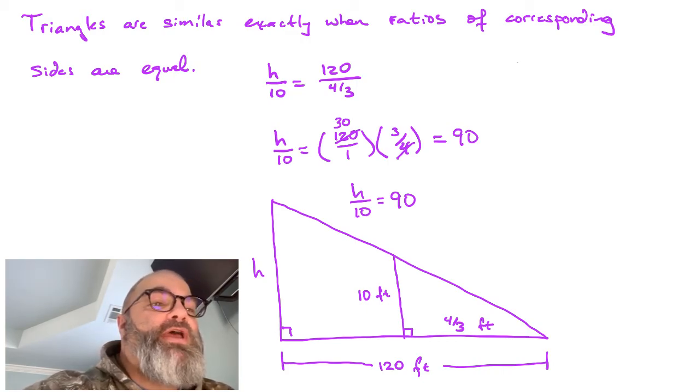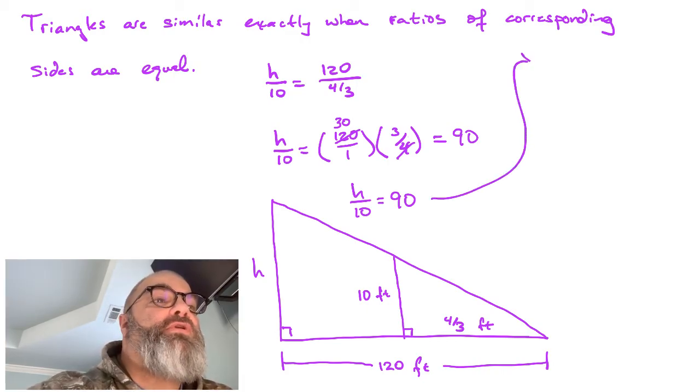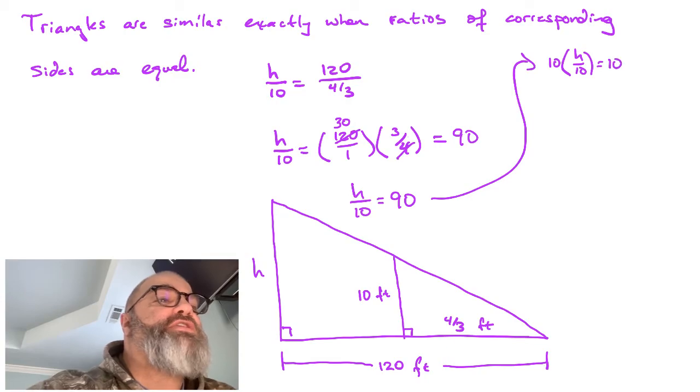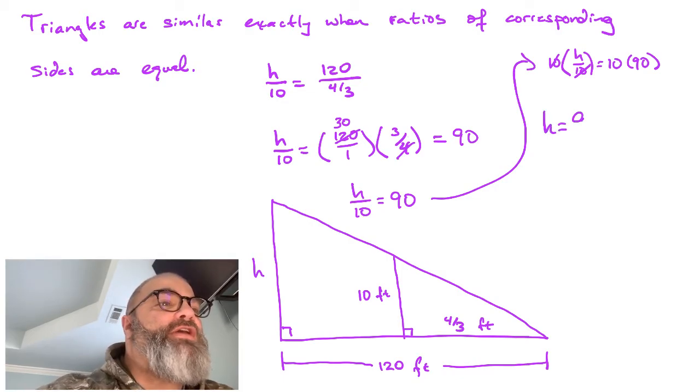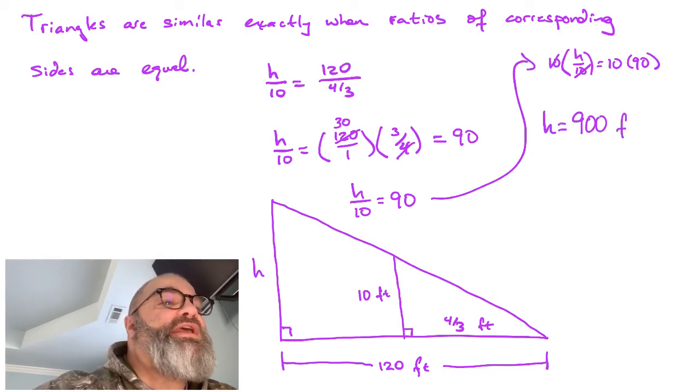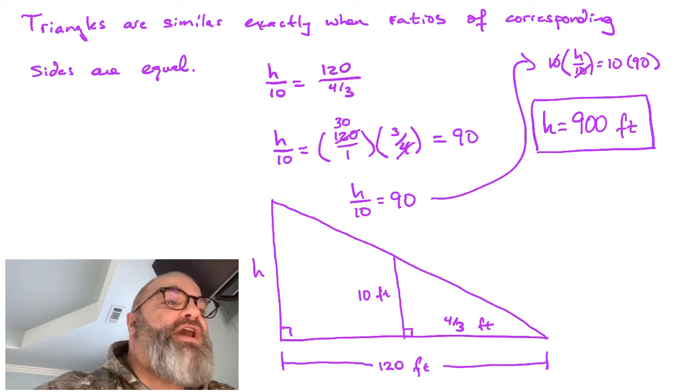From there, what we have to do is multiply both sides by 10. So we go 10 times H over 10, and that's going to be equal to 10 times 90. Our factors of 10 on the left are going to cancel out. And so we're left with H being 900, 10 times 90 feet. The height of our tower is going to be 900 feet.